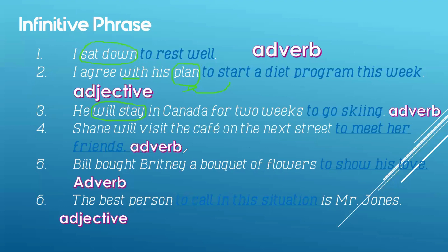Number four: 'to meet her friends' is also an adverb because it describes the verb 'will visit,' answering the question why. Why will Shane visit the cafe on the next street? To meet her friends. Number five: Bill bought Britney a bouquet of flowers. Why did Bill buy Britney a bouquet of flowers? Referring to the verb 'bought,' the answer is 'to show his love' — answering the question why. To show his love.